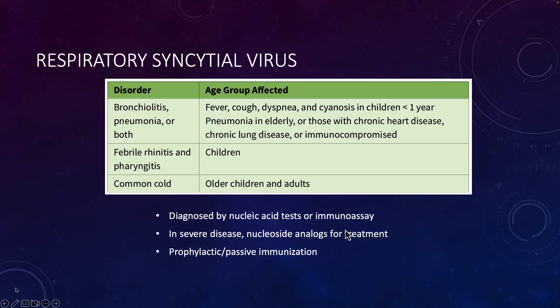The most common symptoms in older children and adults are symptoms of the common cold. In younger children, febrile rhinitis and pharyngitis — basically a fever, runny nose, and sore throat. In very young children under the age of one: fever, cough, difficulty breathing, and cyanosis — turning blue from lack of oxygen. In the elderly, those with chronic heart or lung disease, or the immunocompromised, pneumonia can occur. It can be diagnosed by nucleic acid tests, RT-PCR, or immunoassay. In severe disease, nucleoside analogs are available for treatment, and vaccine development continues to protect our most vulnerable patients.